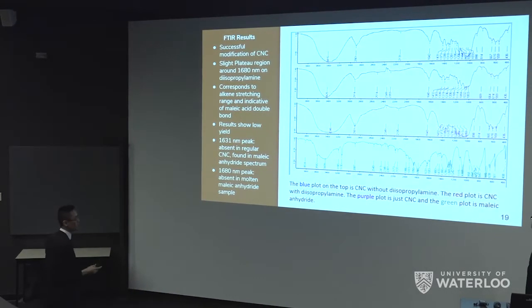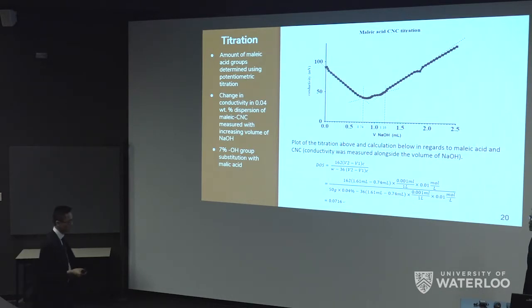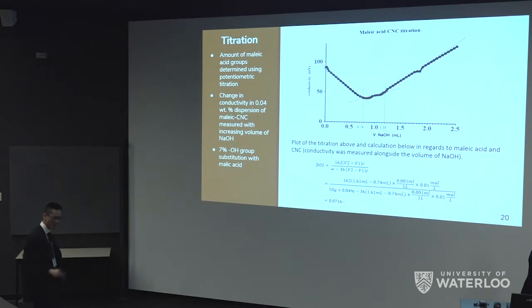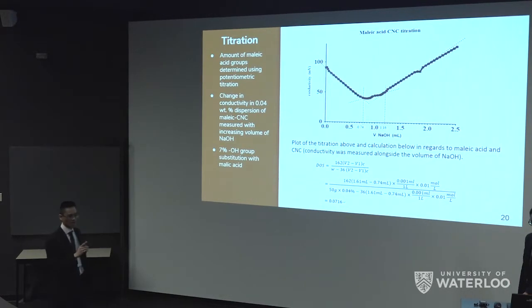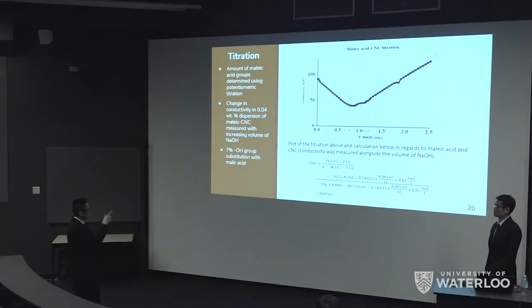However, the peak is really small. Because of this, we wanted to quantify the rate of the reaction using titration. By progressively adding hydroxyl groups to the solution to make it more basic and observing the change in pH, we can determine how many carboxylic acid groups are modified onto the CNC. From this procedure, we find that we only get 7% modification. That seems a little bad, but it's not, because only one of the hydroxyls on CNC is accessible for the reaction, so 7% is actually acceptable.